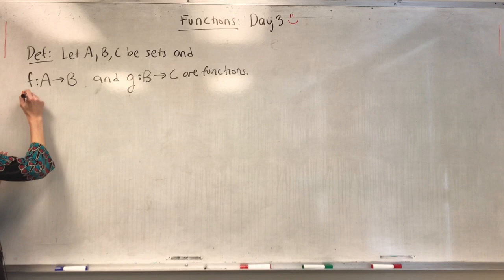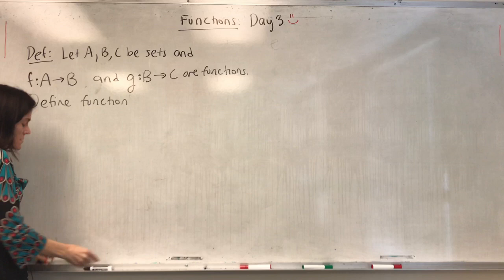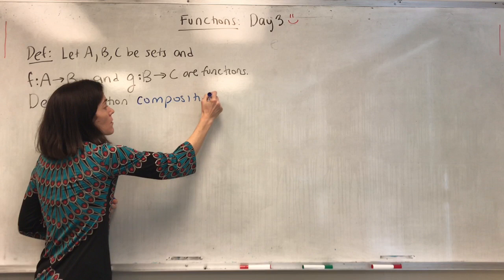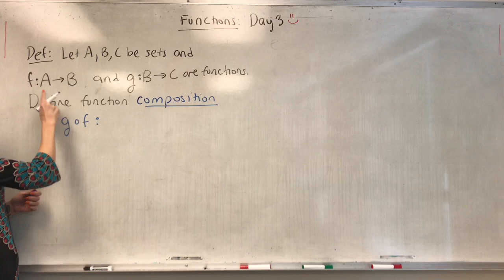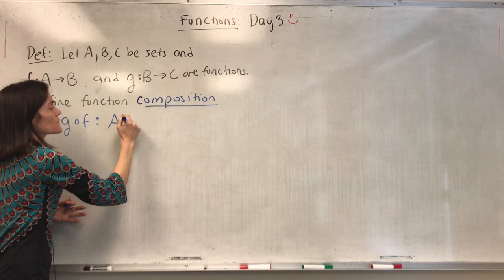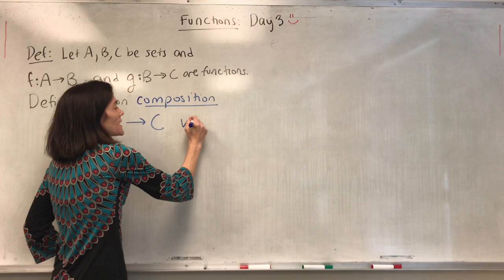We define function composition. This is going to be G compose F — first you do F and then you do G. So F maps from A to B and then you do G, which goes from B to C. This is going to be a function with the same domain as F and the same codomain as G.